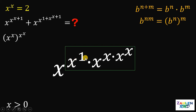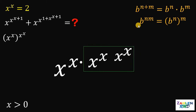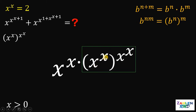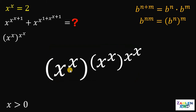Take note that x raised to 1 is just x. Now, let's focus on the expression x raised to x times x raised to the power of x — we need to use the second identity. This is equivalent to x raised to x raised to the power of x raised to x. Now let's focus on the whole expression, which is equivalent to x raised to x times x raised to x raised to x raised to x. Using the second identity, this expression can be written as x raised to x raised to x raised to x raised to x.